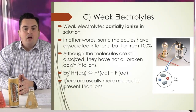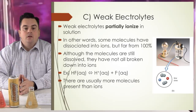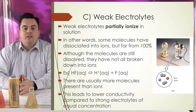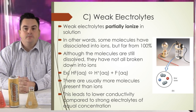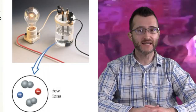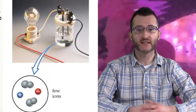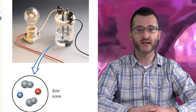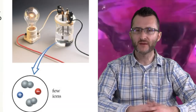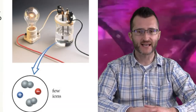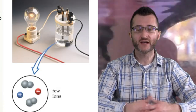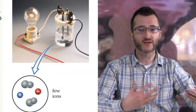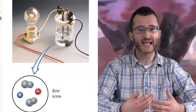There are usually more molecules present than ions. This leads to lower conductivity compared to strong electrolytes of equal concentration. Looking at the image to the right, the light bulb is lighting up, but not as brightly as the strong electrolyte. In the particle diagram, we see that although we have some ions, we also have molecules present, indicating we're not 100% ionized.